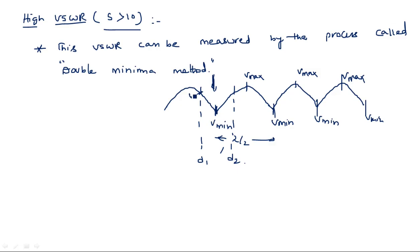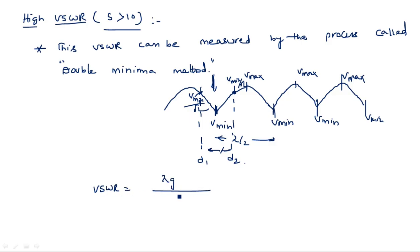Taking Vmin as the reference or center point, we move forward until we get the Vmin/√2 value — the half-power point — recording distance d1. Then we move in the reverse direction to find another Vmin/√2 value, recording distance d2. Using these two distances, the VSWR is calculated as S = λg / (π × (d2 − d1)).